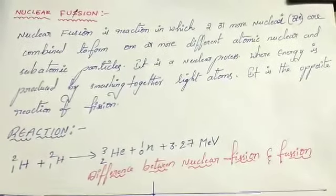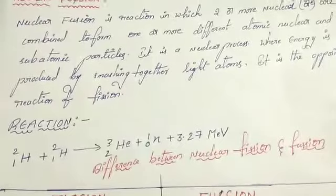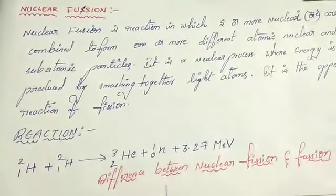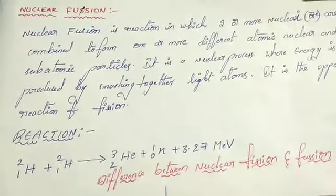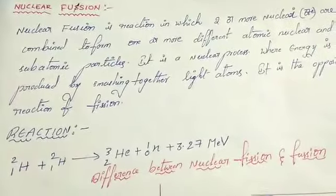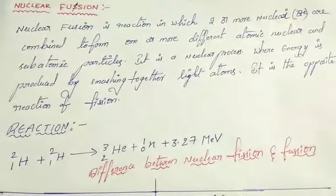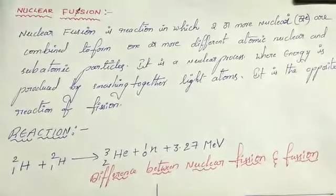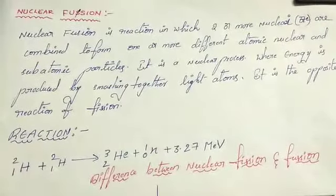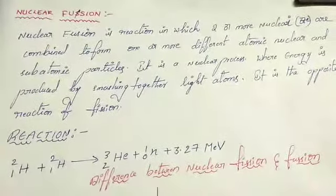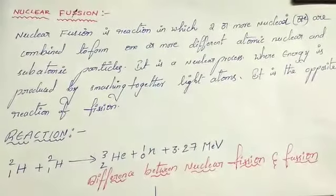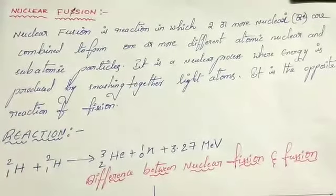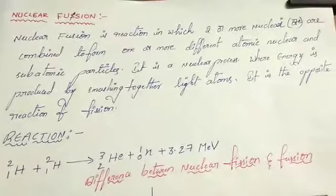See the reaction: H-2-1 plus H-2-1 gives Helium-3-2 plus one neutron, and it gives 3.27 mega electron volts. This is the process in which two lighter nuclei like hydrogen fuse into helium nuclei. In this process, a small mass loss is converted into energy, and we can get a huge amount of energy.